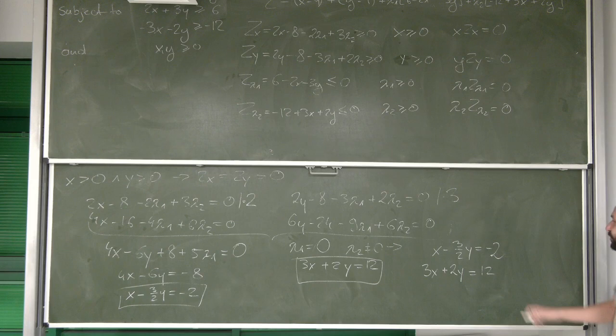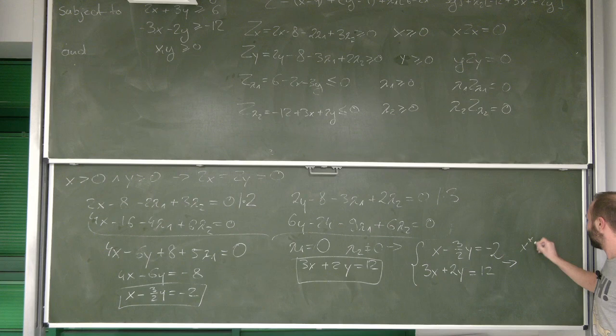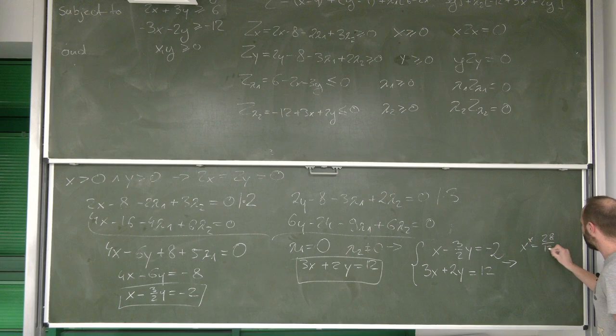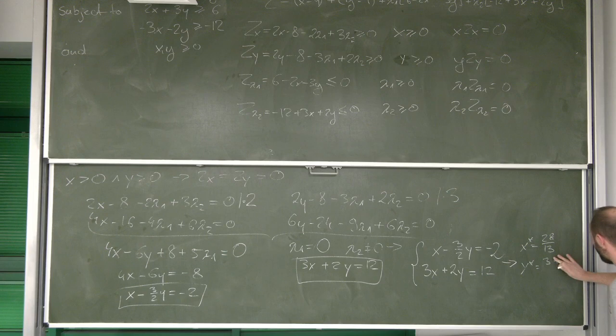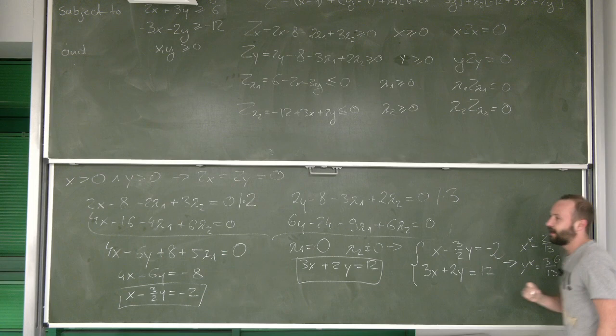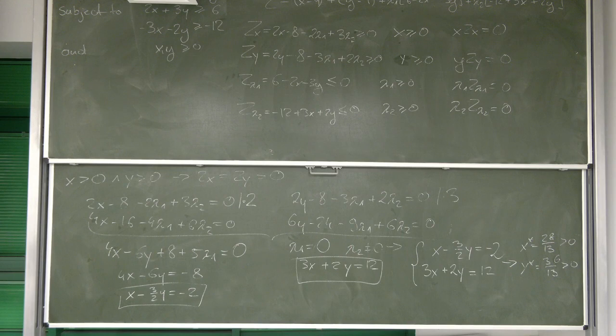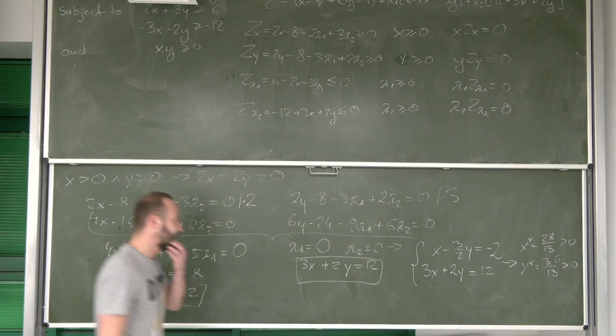Again, now, if we take this system and we're going to solve it, we're going to get that x is equal to 28 over 13 and y is equal to 36 over 13, both of which are higher than 0. Okay, so those are pretty good candidates for our solution.